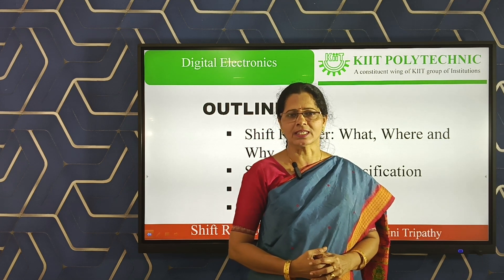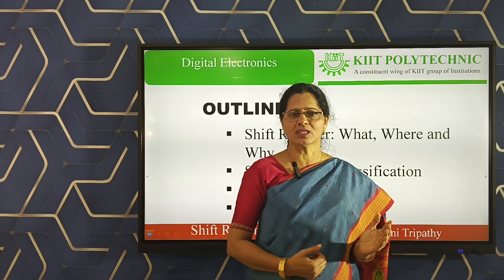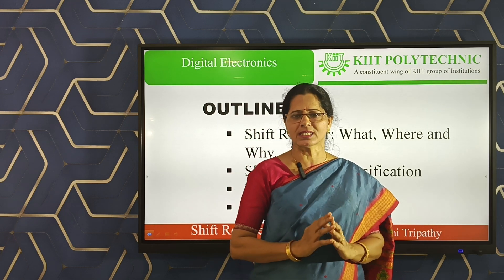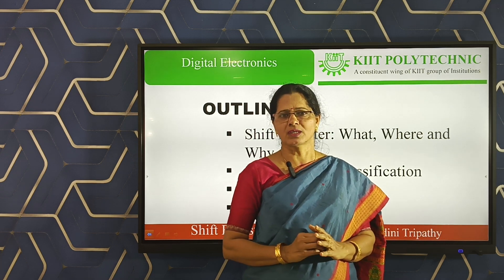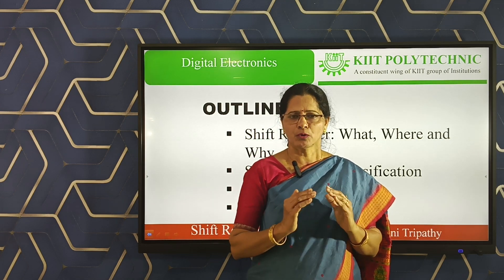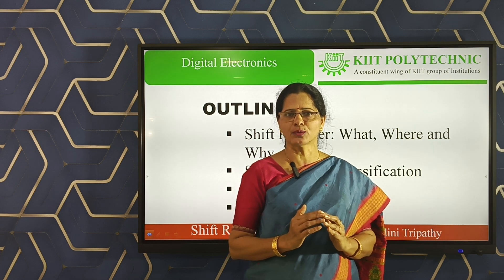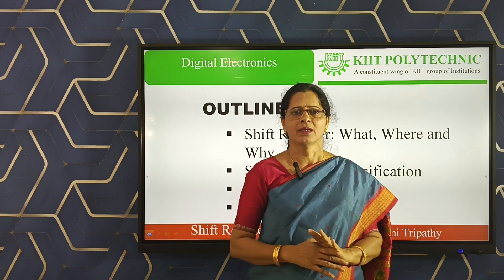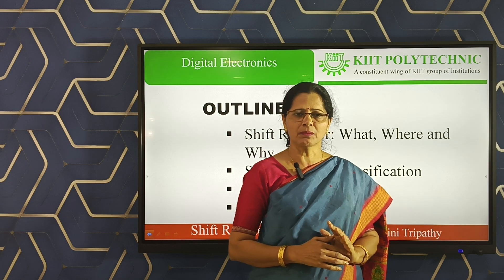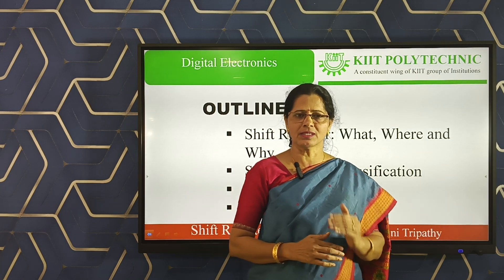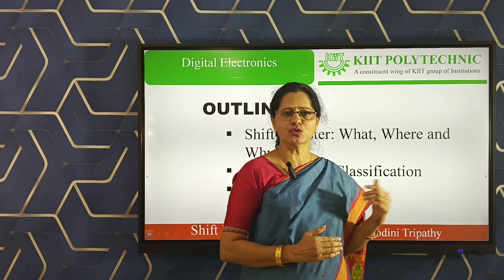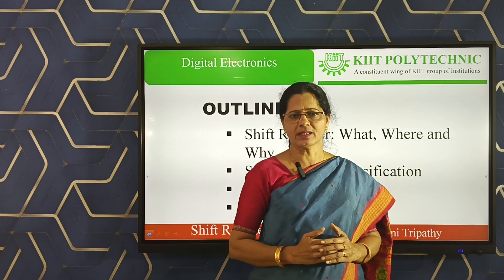Why do we use the word sequential circuit here? Because all digital circuits are broadly classified into two classes. Overall, digital circuits are classified into two categories: one is combinational and another is sequential. Under combinational, we have already finished so many logic devices like adder, subtractor, multiplexer, and demultiplexer. Similarly, under sequential circuits, we have finished flip-flops, and another example is counter. Today's topic, the shift register, is also one example.